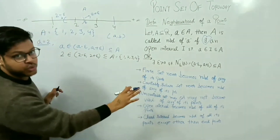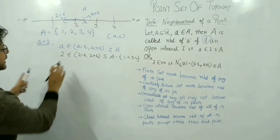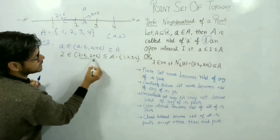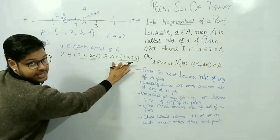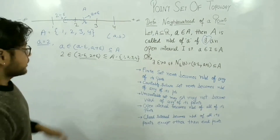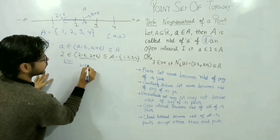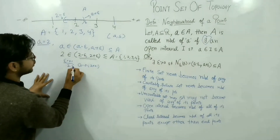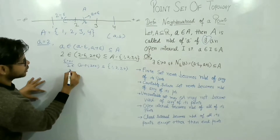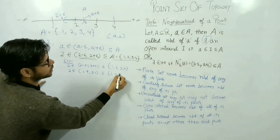In this open interval, uncountable points exist. If I choose epsilon equal to 0.1, then the interval is (2 minus 0.1, 2 plus 0.1), that is (1.9, 2.1). Now, 2 belongs to this interval — that is correct. But is (1.9, 2.1) a subset of {1, 2, 3, 4}? The interval (1.9, 2.1) contains uncountably many points, whereas our set only has the points 1, 2, 3, 4.